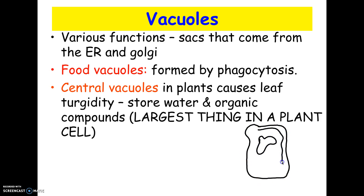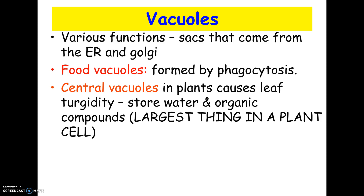In a really severe situation, the cell membrane can even pull away and the cell walls sort of collapse, so they don't look as stiff anymore. So the central vacuole is something I could ask you to label on a test.